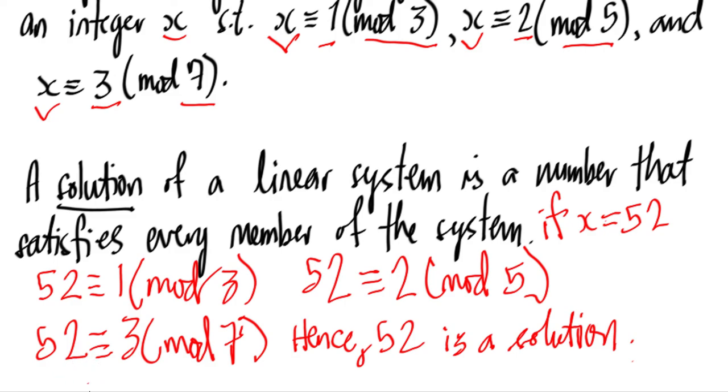22 is not congruent to 3 mod 7, because 22 divided by 7 is 3 with remainder 1, not with remainder 3. Therefore, if one of the values of x does not fit the congruence of the system, then that x does not satisfy the whole system itself, the linear system.